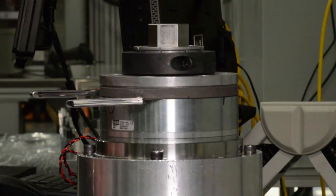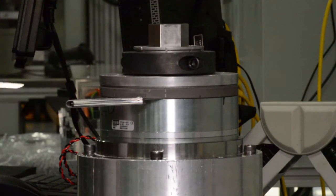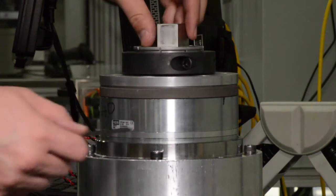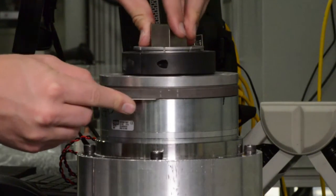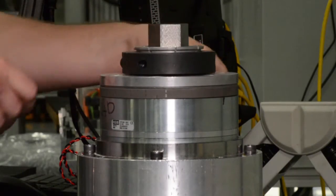When the hub armature is secure, double check the air gap to ensure it is consistent around the entire circumference of the brake. Adjust if needed.